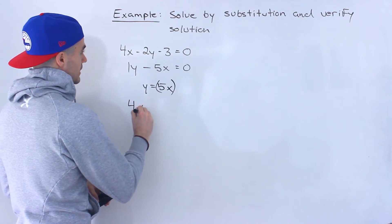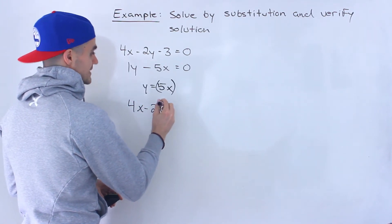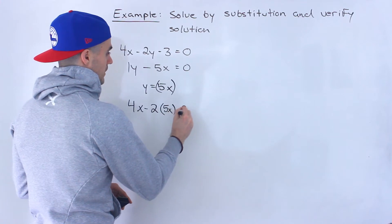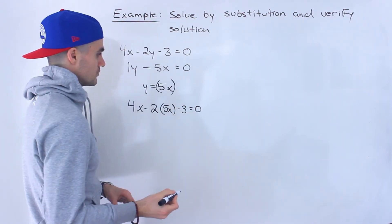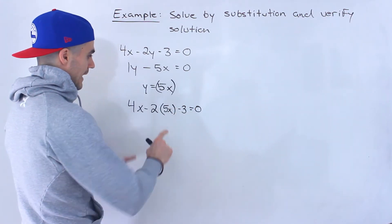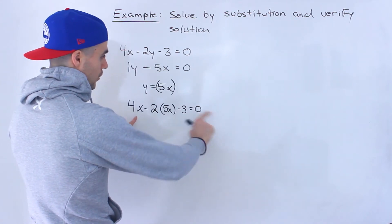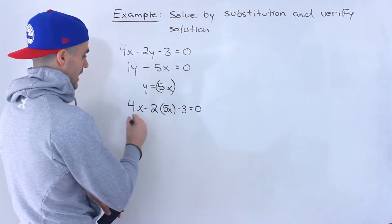So I'll end up having 4x minus 2 times 5x minus 3 equals 0. And now notice that we have an equation in terms of one variable we could solve for x.